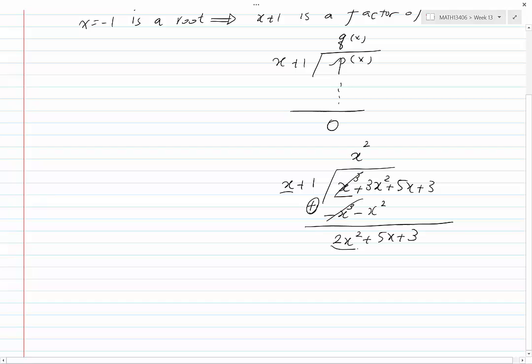Divide the leading term by the leading term and you will have 2x. 2x times x is 2x squared, we write minus 2x squared. 2x times 1 is 2x, we write minus 2x.